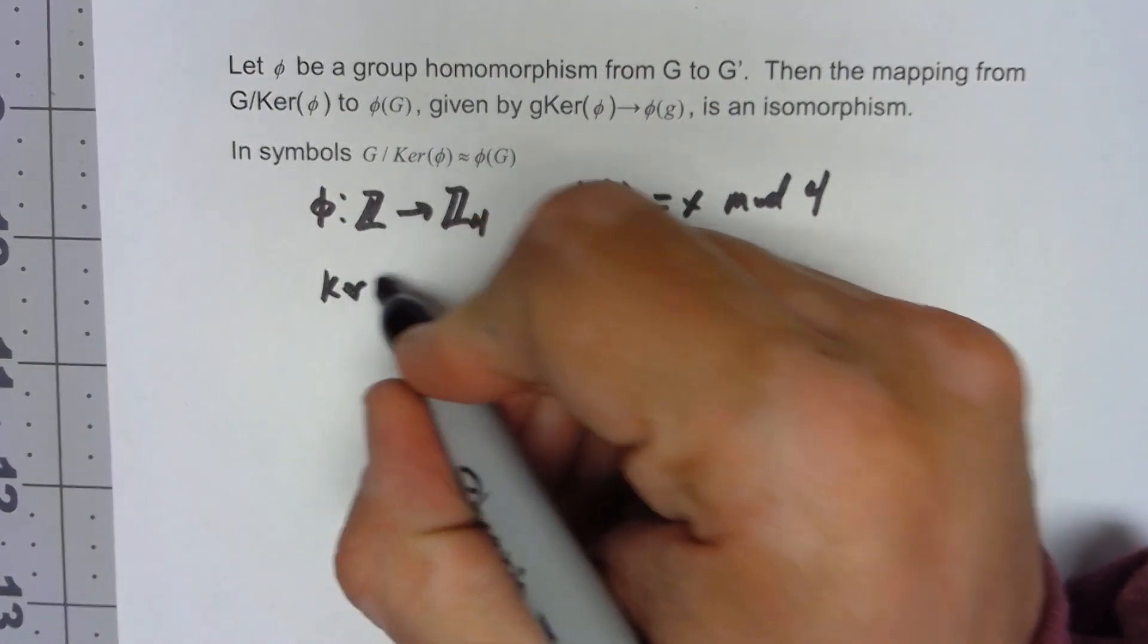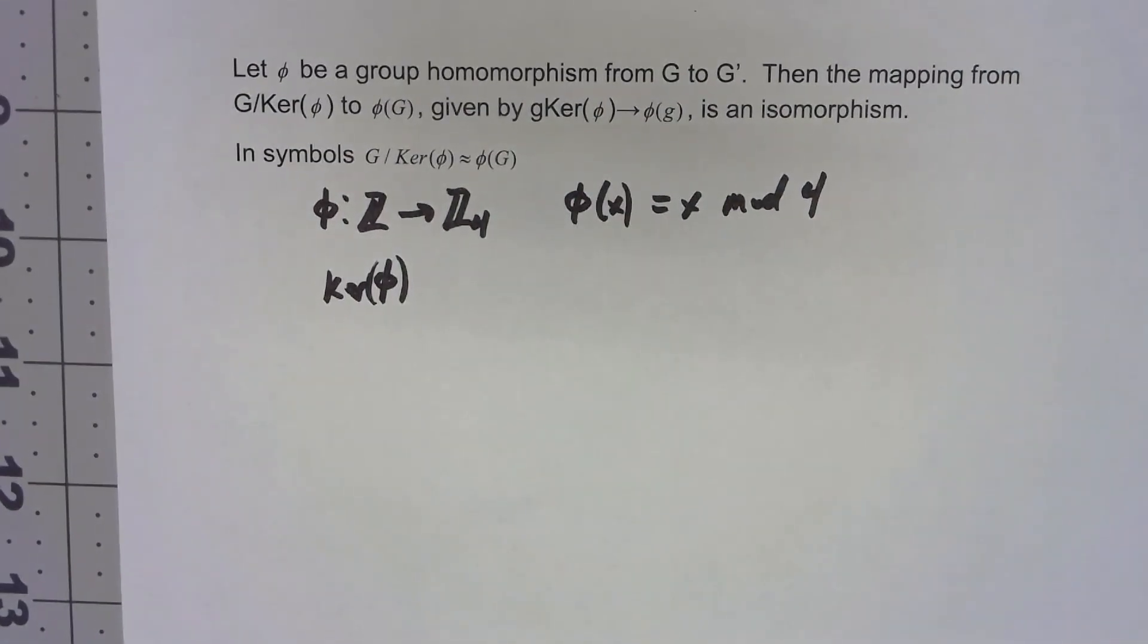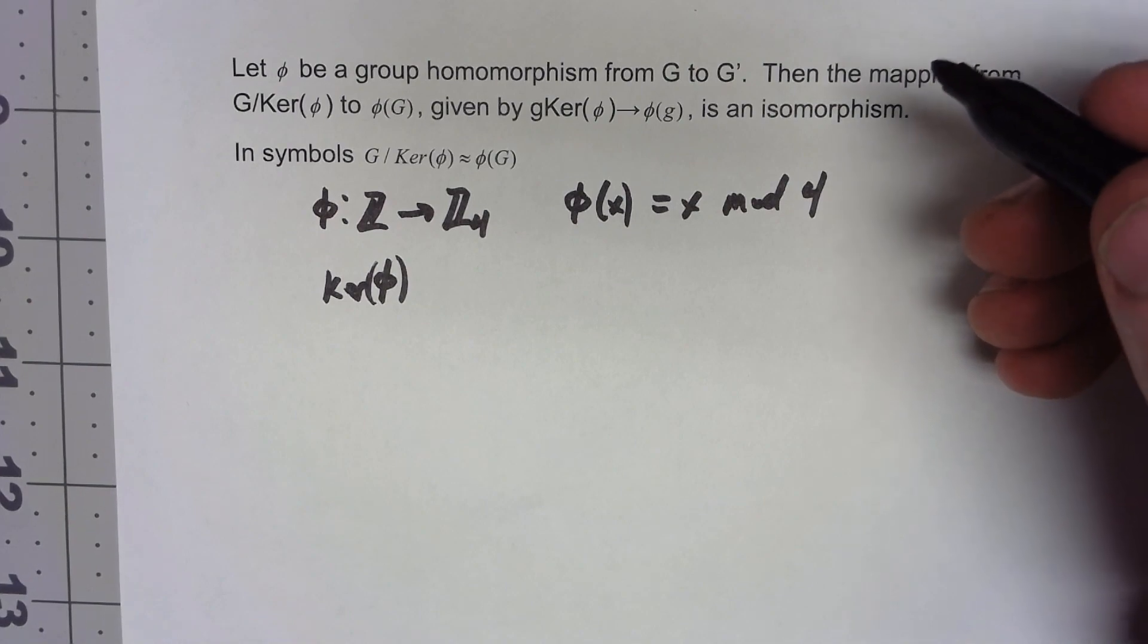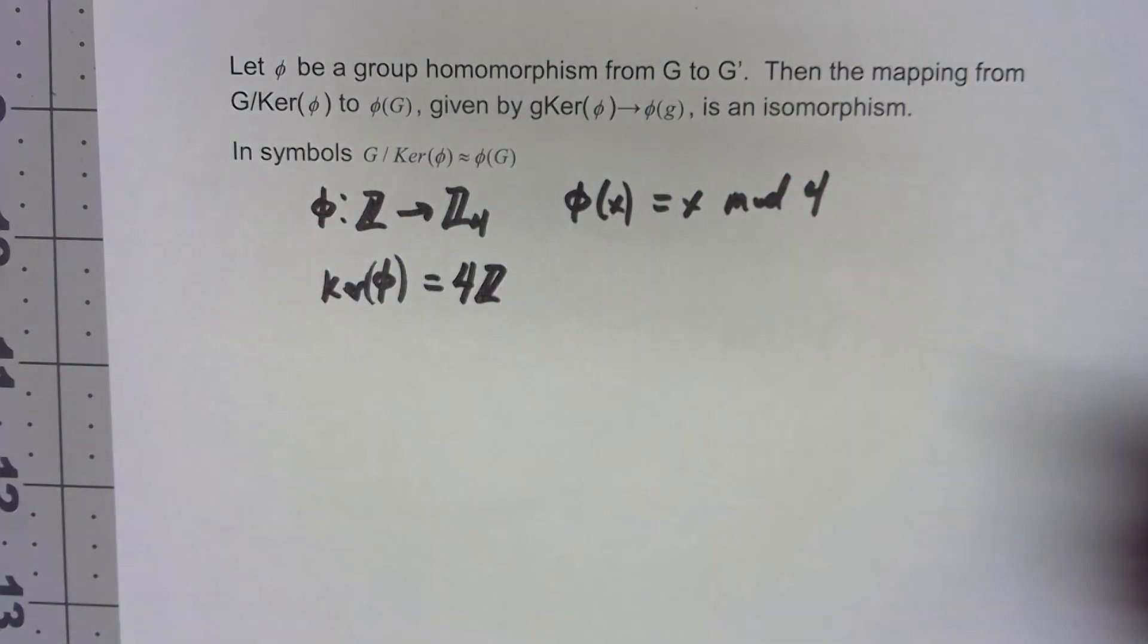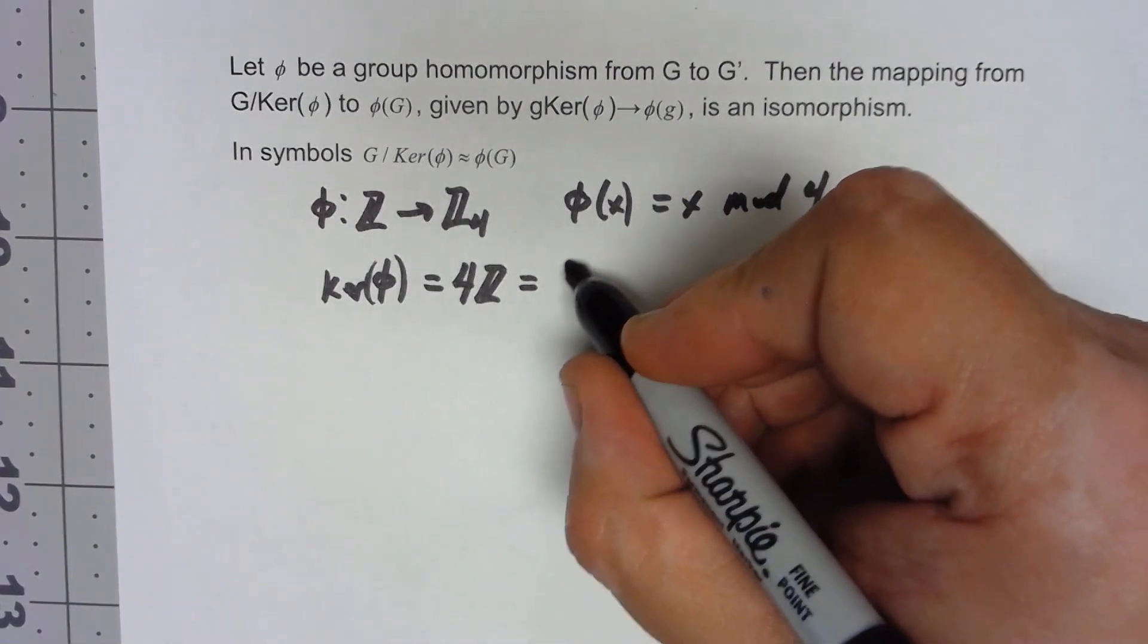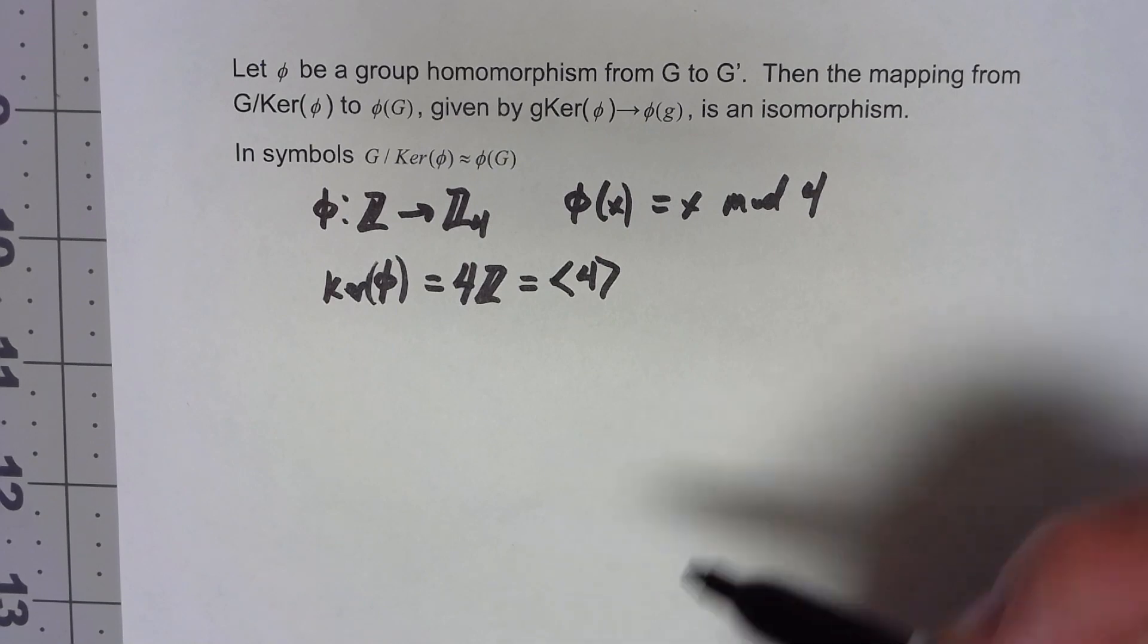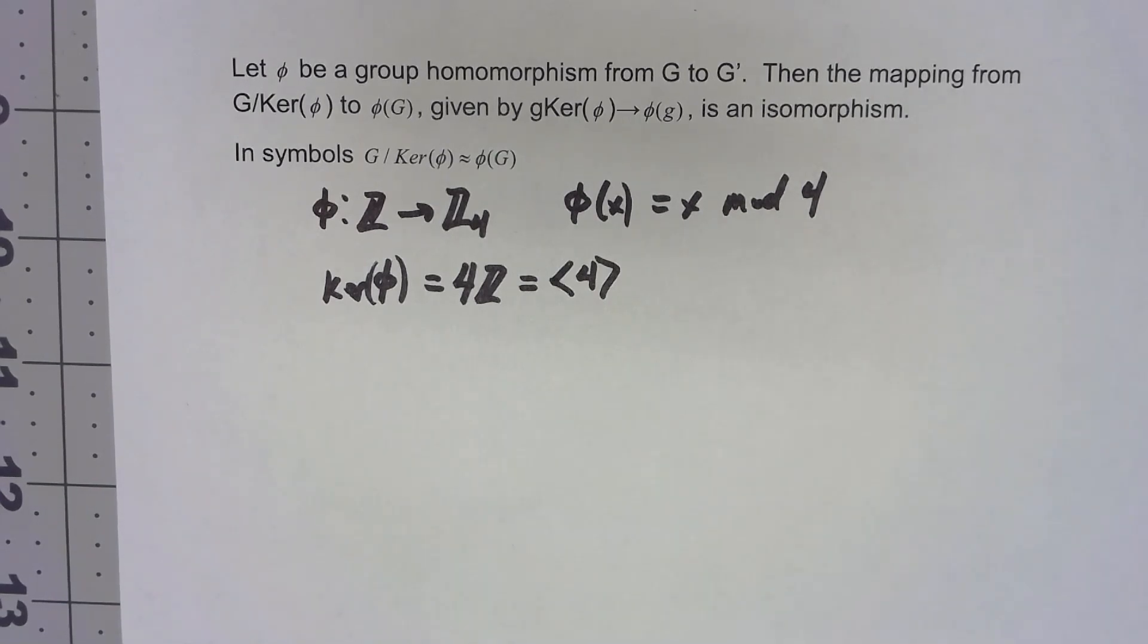So let's start thinking about this. The kernel of phi is the set of all things that map to 0. The things that when you take mod 4 and get 0 are the multiples of 4. Now I actually called that thing 4Z in the last video and that's a perfectly fine way of writing it, though another one which is actually more the notation we've used is that in Z that's the cyclic subgroup generated by 4 because remember we don't only get the 4 plus 4 plus 4 things like that. We also get the inverse of 4 so that's where we pick up all the negative multiples of 4.